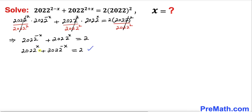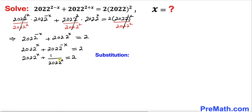Rearranging these terms, let's write 2022 whole power x plus 1 divided by 2022 whole power x equals 2. To make our job easier, let's make a substitution: I'm going to call 2022 whole power x as u. So let me write u equals 2022 whole power x.